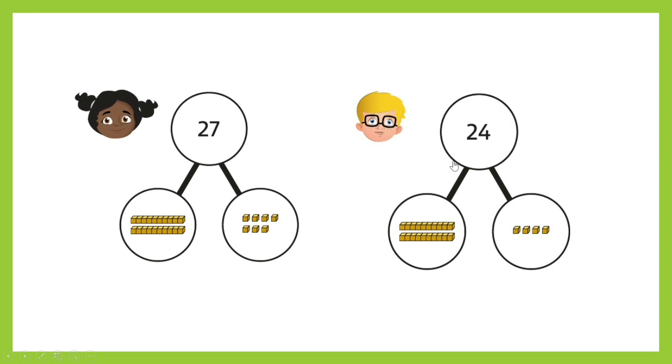How could you use these part-whole models to help you compare the numbers? As you can see, children, this way we can easily compare the number of tens and ones each number has. And this will help you compare numbers by looking first at the number of tens. So, what can you say about these two numbers? That's correct. Ola's number, which is 27, and Ben's number, which is 24, have the same number of tens, 2 tens and 2 tens.